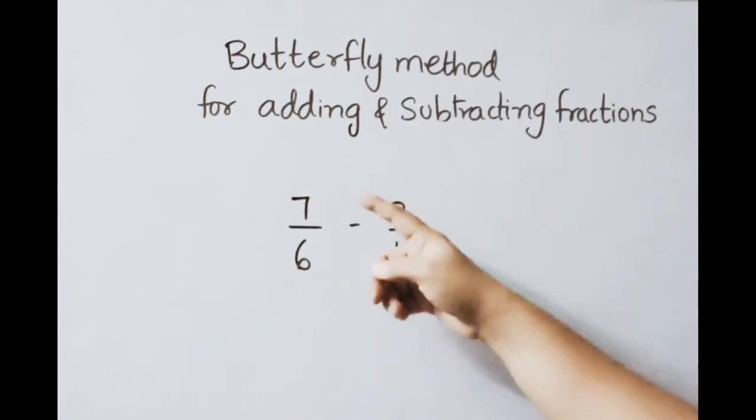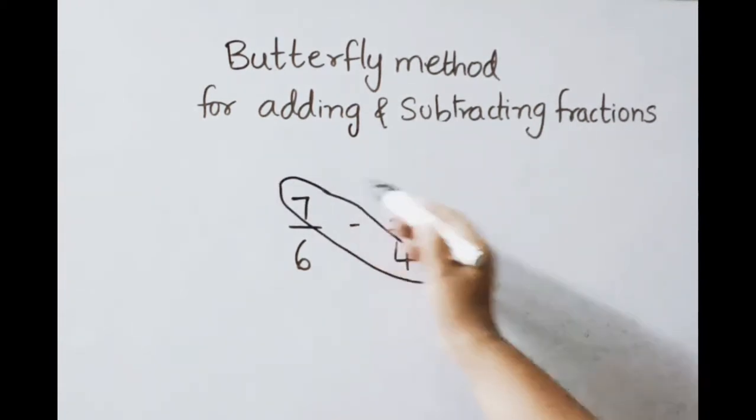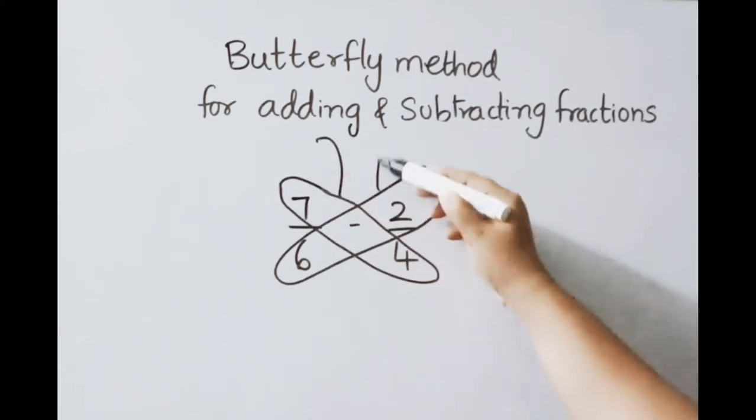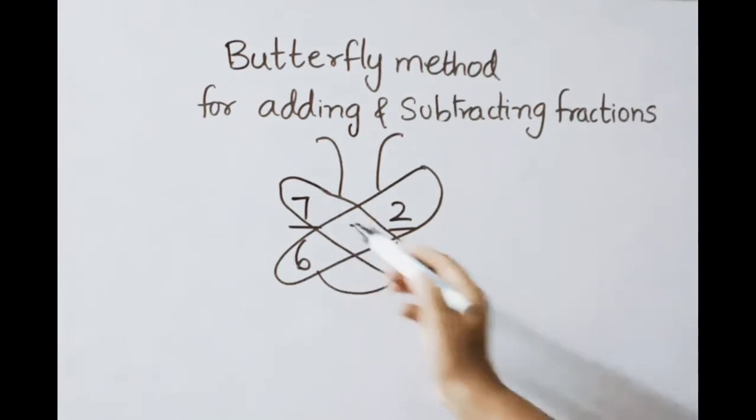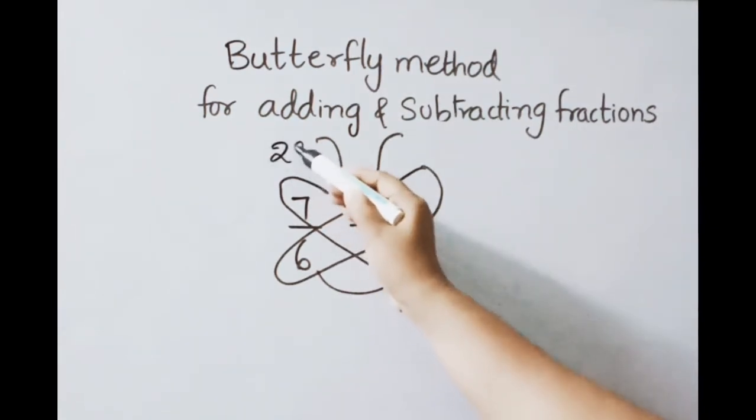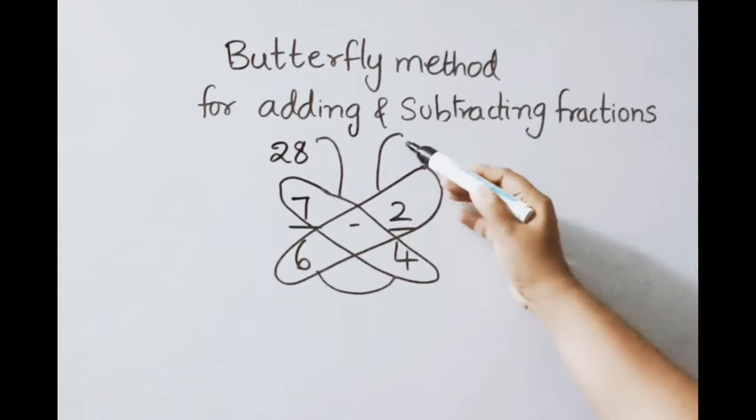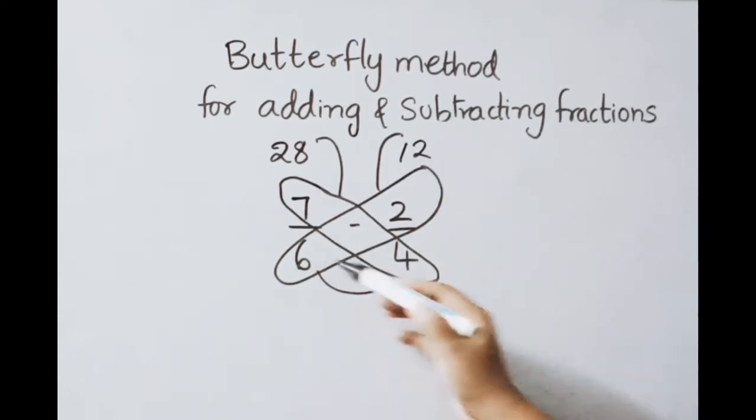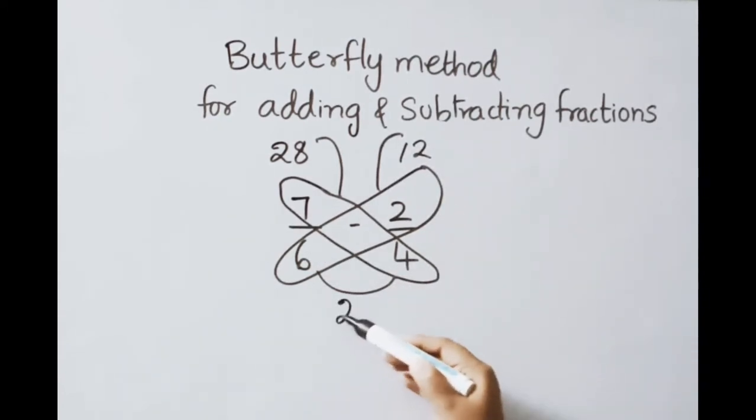See now subtraction. 7 by 6 minus 2 by 4. Now we are using butterfly method to solve this. 7 4's are 28. 6 2's are 12. 6 4's are 24.